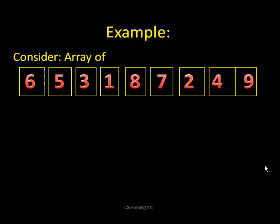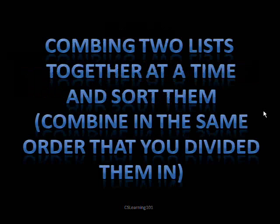They're not individual yet, so we have to keep dividing. At the end there, you still have one list with two elements, so you have to divide that again. Now everything has been divided. Now you have to combine two lists together at a time and sort them. Remember that you should combine them in the same order that you divided them in to begin with.